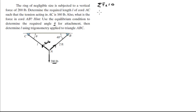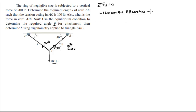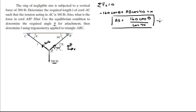Assuming this orientation for X and Y, we have minus 160 times the cosine of theta, plus AB times the cosine of 40 — because if this angle is 40, this angle is also 40 degrees — and that equals zero. So AB is equal to 160 cosine of theta over cosine of 40. Let's call this equation 1.